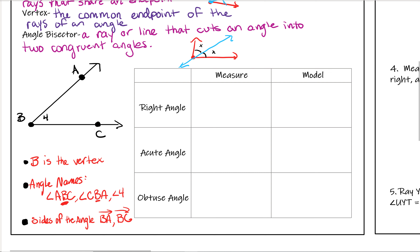Next, let's talk about specific kinds of angles. A right angle is specifically a 90-degree angle — any angle with exactly 90 degrees. It usually looks like a perfect corner, and they'll typically give you a small square in the corner to show you it's a 90-degree angle.